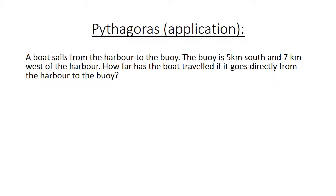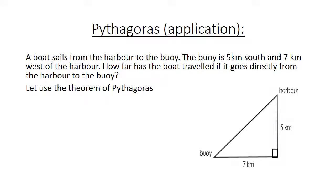Pythagoras application. A boat sails from the harbor to the buoy. The buoy is 5 kilometers south and 7 kilometers west of the harbor. How far has the boat traveled if it goes directly from the harbor to the buoy? We have a right angle triangle, going from the harbor heading west. Let's use the theorem of Pythagoras.